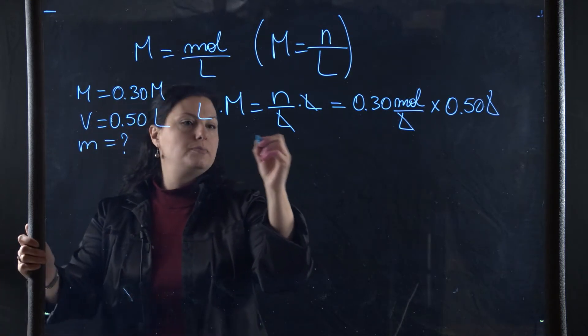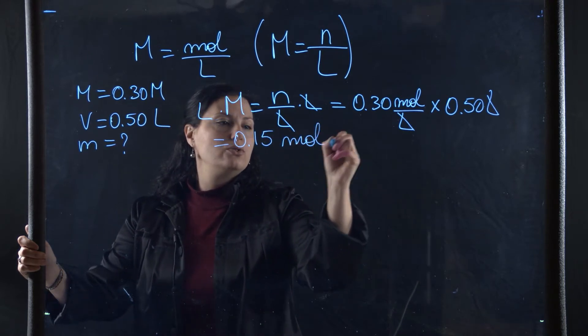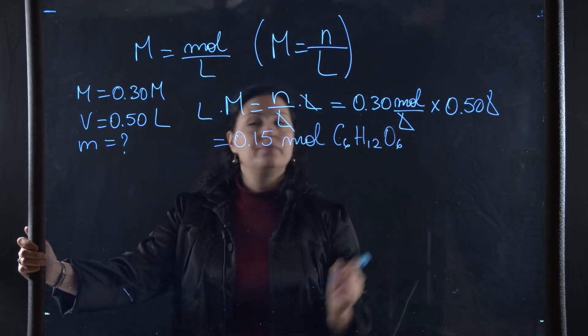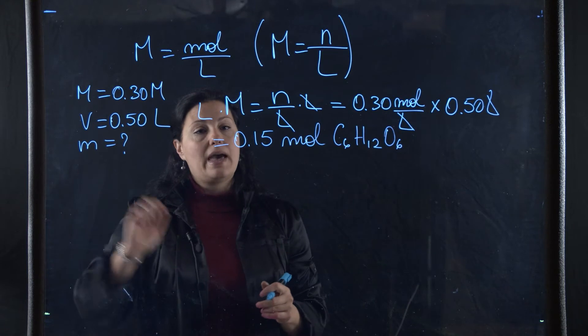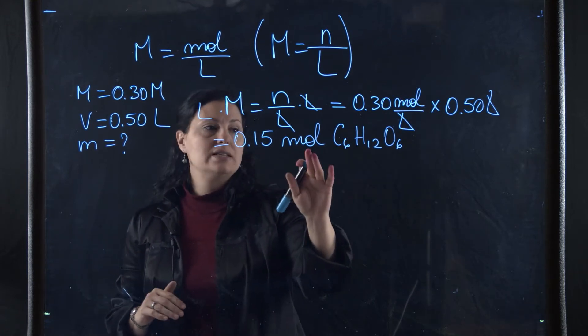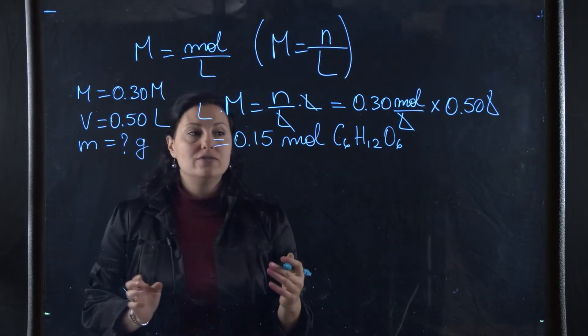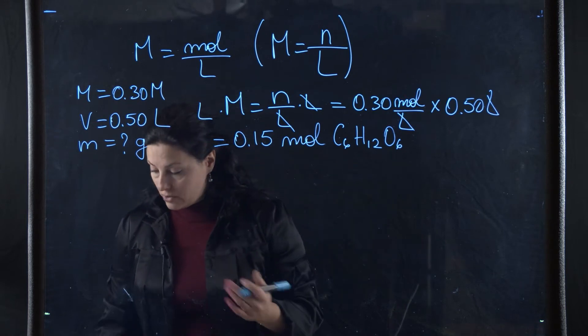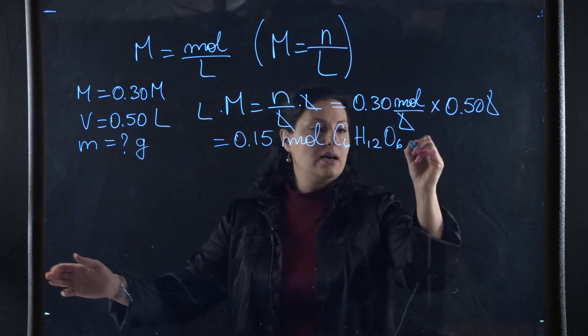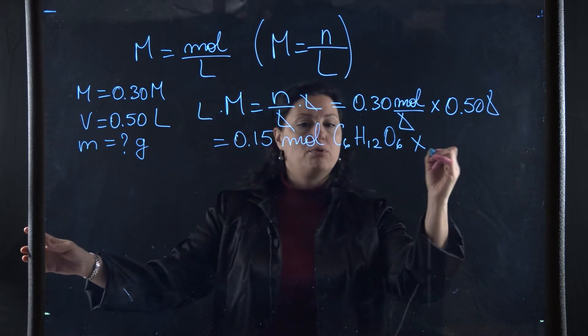So this is 0.15 moles of glucose, C6H12O6. Now I'm asked to figure out the mass. Any time you have an amount of moles and you want to figure out the mass in grams, you have to use the molar mass of this compound, which is 180.16 grams per mole.